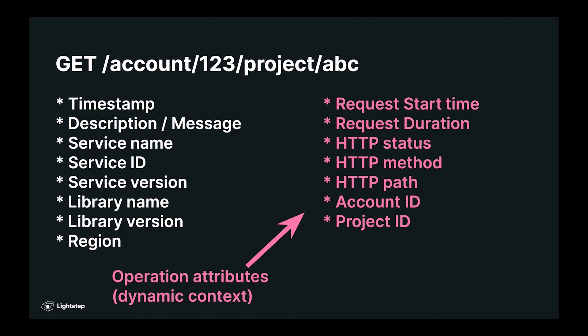There might be some application-specific information. For example, the account ID and the project ID extracted from the URL. And you want all of the events in this request to be associated with these attributes. So we can think of these attributes as describing the operation in which these events are occurring.